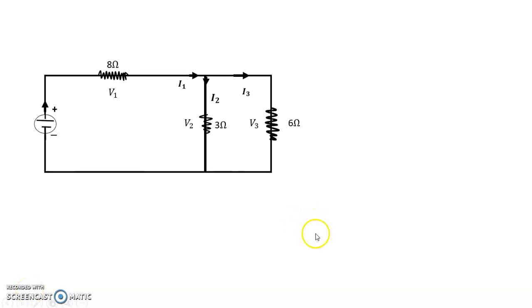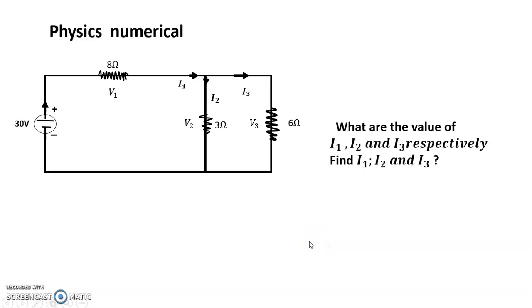Hello dear friends, welcome to my channel. Today's discussion is physics numerical problems. We have a 30 volt circuit with 8 ohm resistor V1, and currents I1, I2, and I3 passing through. What are the values of I1, I2, and I3 respectively? Find I1, I2, and I3.